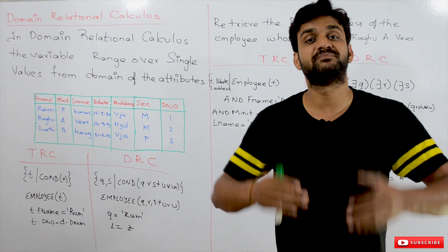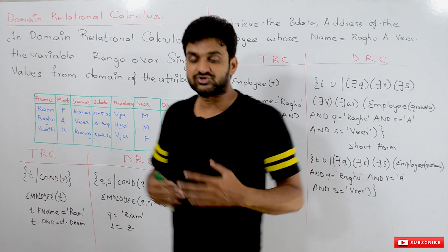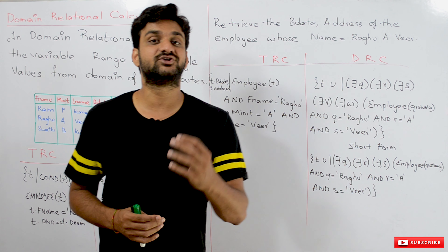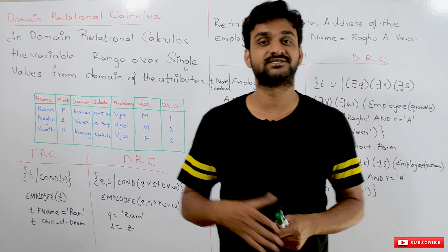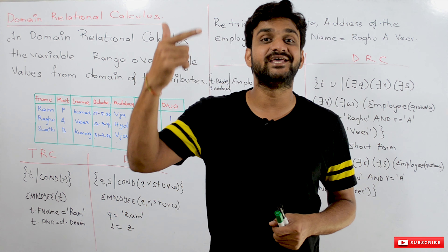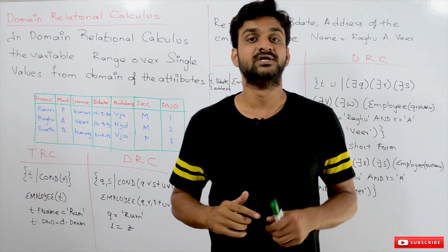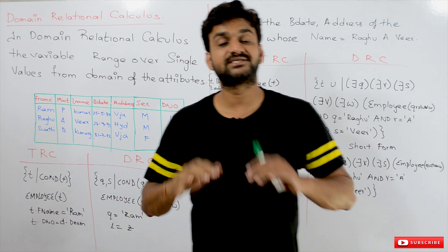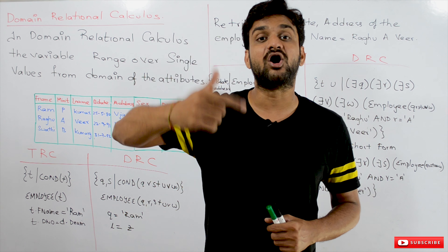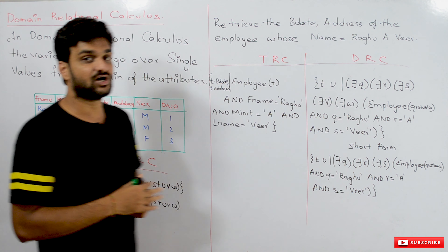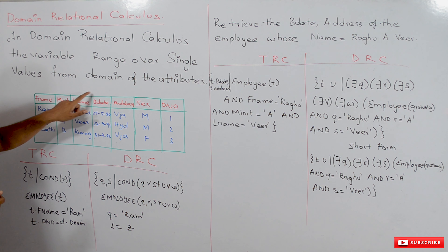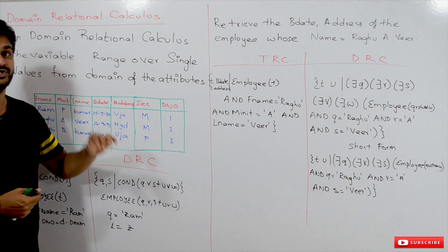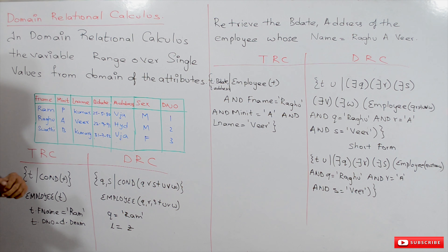The main difference between tuple relational calculus and domain relational calculus is: in tuple relational calculus we take a variable for each and every tuple, whereas in domain relational calculus we take a variable for each and every domain or attribute. So for every attribute we have to take a separate variable. This is how the domain relational calculus works.